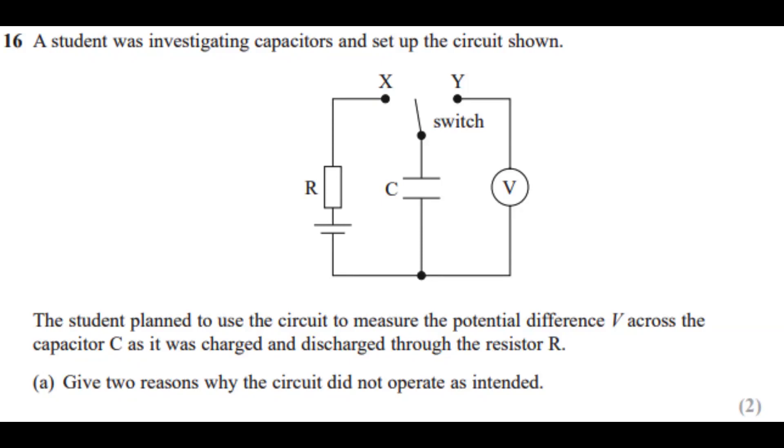I have a question here: A student was investigating capacitors and set up the circuit shown. The student planned to use the circuit to measure the potential difference V across the capacitor C as it was charged and discharged through the resistor R. Give two reasons why the circuit did not operate as intended.